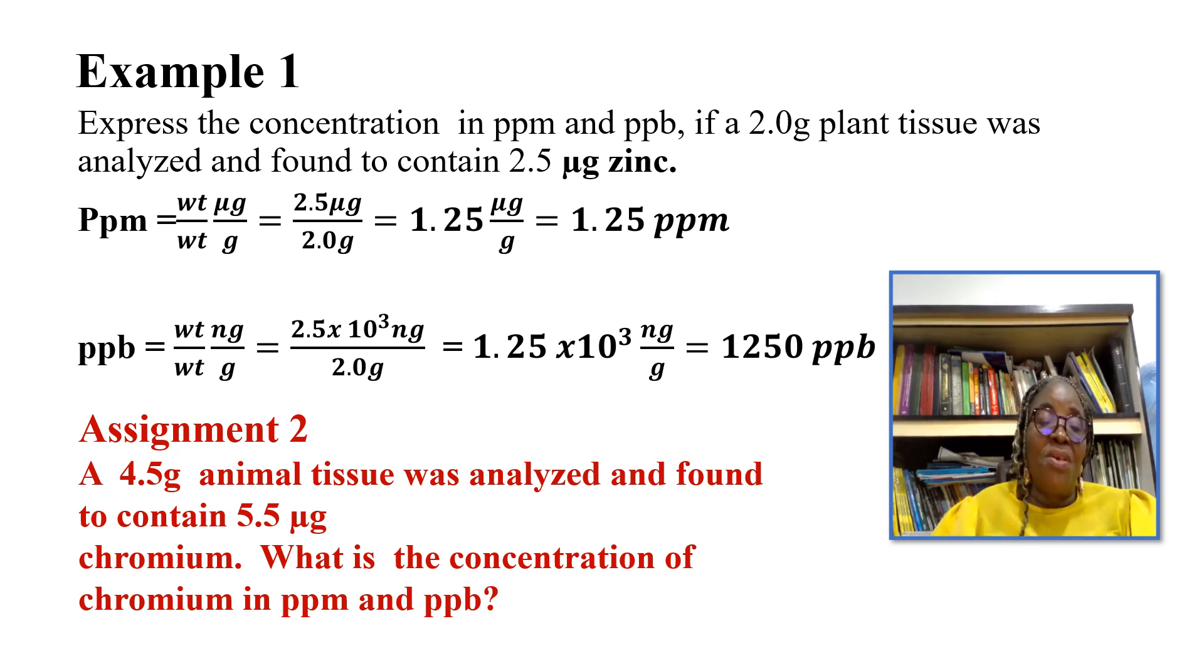I'll give you assignment 2. A 4.5 gram animal tissue was analyzed and found to contain 5.5 micrograms chromium. What is the concentration of chromium in parts per million and parts per billion? Attempt this assignment and put it on the comment section.